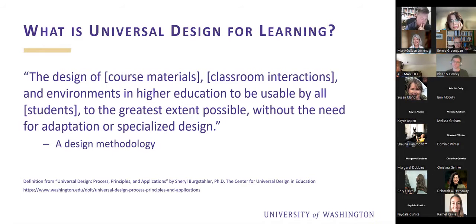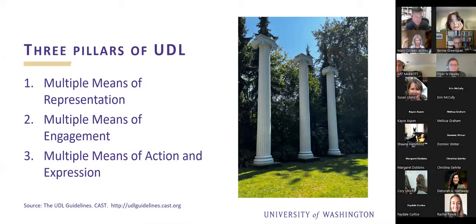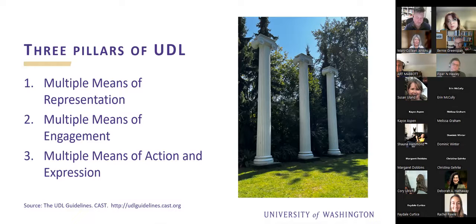The three pillars of universal design for learning: on screen I have a picture of columns at the University of Washington's sylvan grove. The three pillars are: multiple means of representation, multiple means of engagement, and multiple means of action and expression. For those unfamiliar, these come from the UDL guidelines from CAST — the Center for Applied Special Technology. They have great resources online if you want a more in-depth discussion of these three pillars.